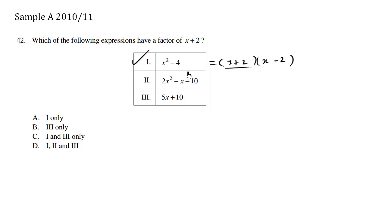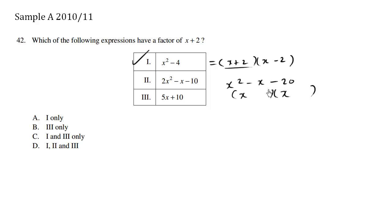Now here we're going to factor this. There are many ways to factor. One way is to rewrite it without the coefficient. We have x squared minus x minus. The number here: 2 times negative 10 is going to be minus 20. So we're going to factor this. What times what is negative 20, but adds to be negative 1? This is going to be 5 times 4, so negative 5 and positive 4. Negative 5 times 4 is negative 20, and negative 5 plus 4 adds to be negative 1.